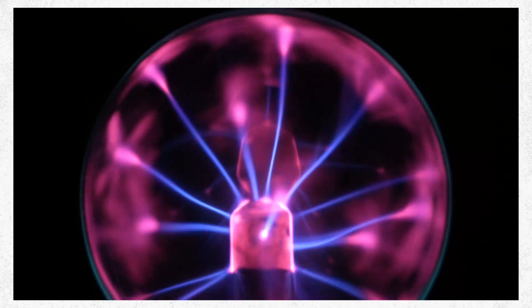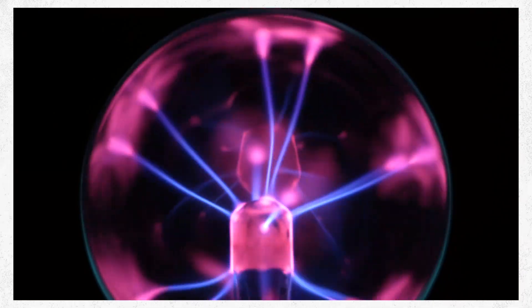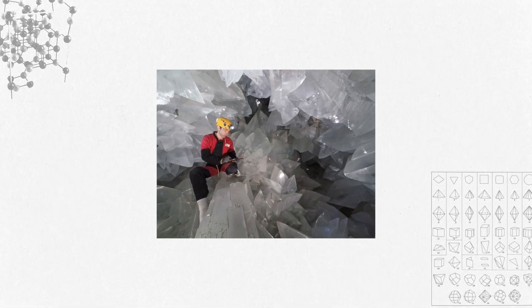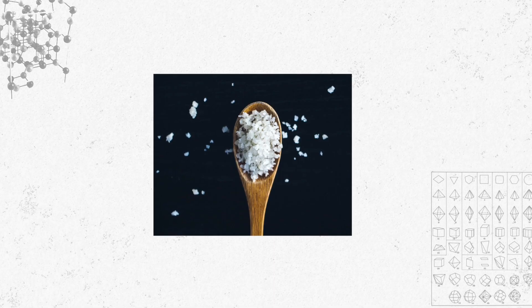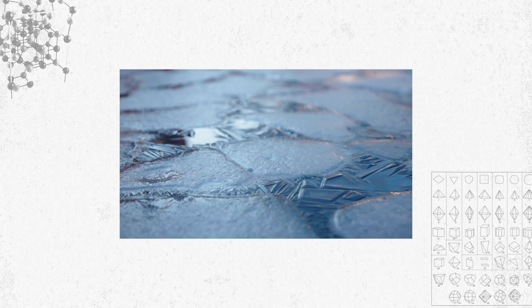But before we go blasting our protein sample with a high-powered X-ray beam, we have to pull one more trick. We need to crystallize our protein. Why is that? Well, a crystal is a special class of material where all of the molecules inside are aligned in a repeating pattern. Liquid water is not a crystal because the water molecules in it slosh around. But when water freezes into ice, all of the water molecules get locked into a repeating crystal pattern.